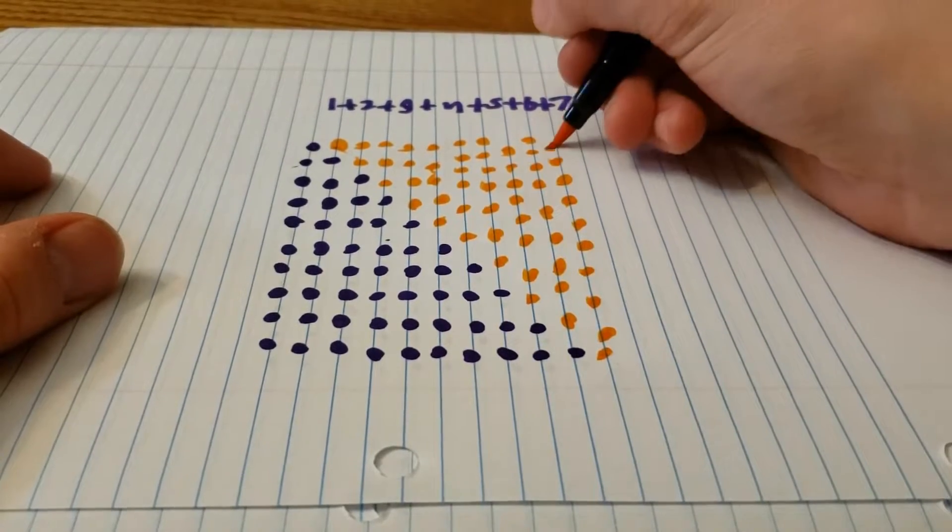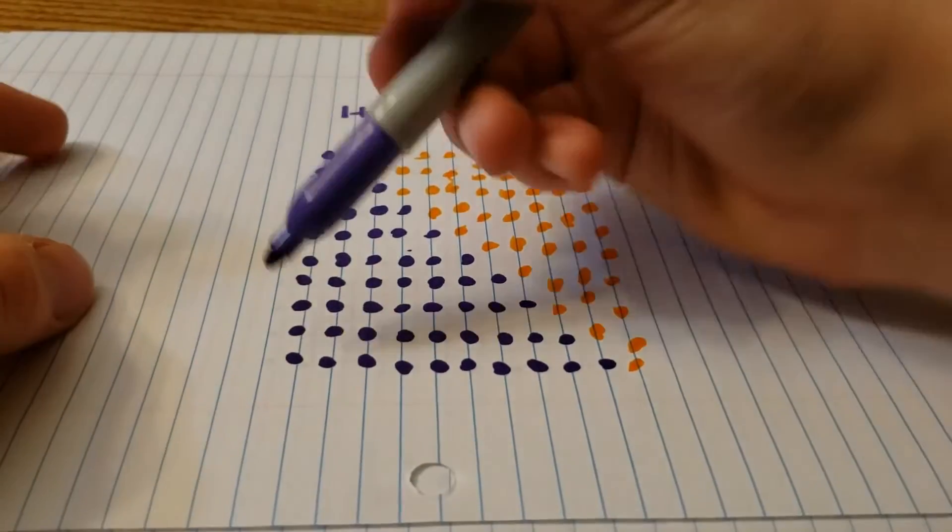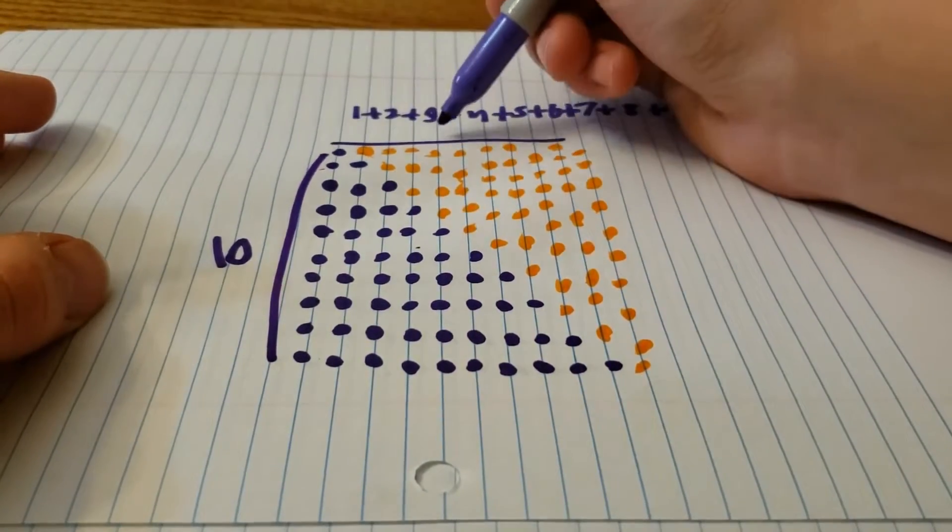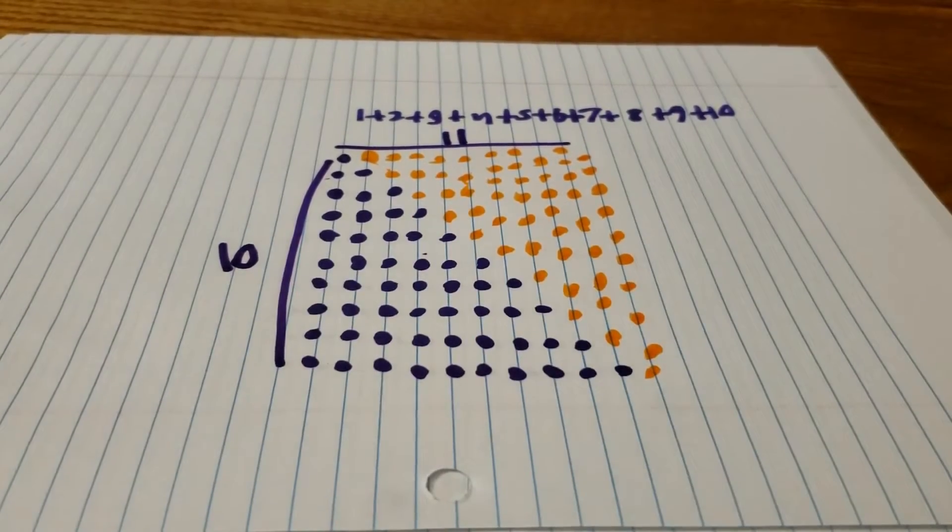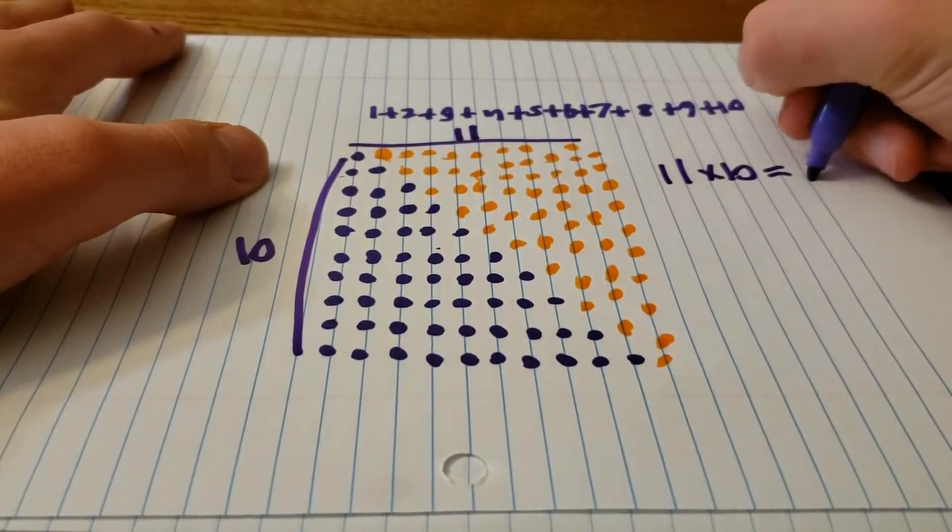Legend has it that the famous mathematician Carl Friedrich Gauss, sorry that I butchered that, discovered this while he was in first grade when his teacher gave him the assignment to add the numbers from 1 to 100 as busy work, and he realized this and was the first one to turn it in.